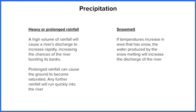High volumes of rainfall will cause a river's discharge to increase rapidly and increase the chance of the river breaking its banks. Heavy rainfall leads to more surface runoff — the ground can't cope with the amount of rainfall coming in, so water falls across the ground, which is a quicker way to get to the river, meaning there's more water there to burst the banks.